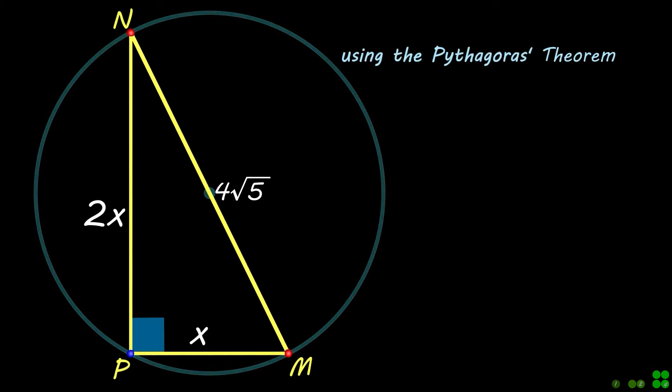Using the Pythagoras theorem, the side MN is related to the other two sides by this equation.